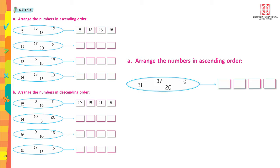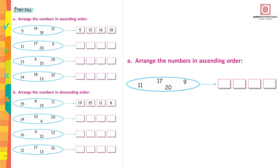Similarly, let's move on to the second set. There are four numbers given: 11, 17, 20, 9. Which is the smallest number here? Yes, 9 is the smallest number. And after 9, which is the next number? 11. And which is bigger than 11? 17. Then which number comes next? 20. Let's arrange them: in the first box write 9, then 11, then 17, and in the end write the biggest number, which is 20. Now do the rest of the sums yourselves.